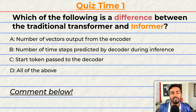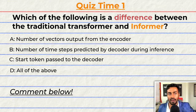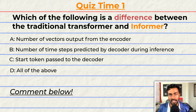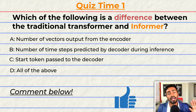Quiz time — have you been paying attention? Which of the following is a difference between the traditional Transformer and the Informer architecture? A: the number of vectors output from the encoder. B: the number of timestamps predicted by the decoder per inference. C: the start token passed to the decoder. Or D: all of the above. Comment your answer down below. And if you think I deserve it, please consider giving this video a like. That's it for pass one.